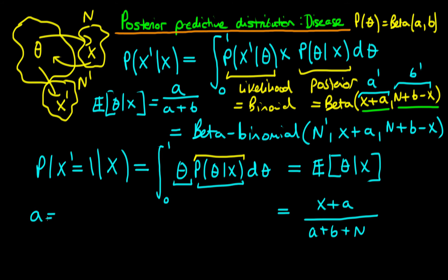In the case of a flat prior where a equals b equals 1, this becomes (x plus 1) over (n plus 2). It's easy to see how the data influences our posterior predictive probability. As x — the number of individuals in the sample who have the disease — increases while holding n constant, the probability increases. As n increases while holding x fixed, that represents a smaller proportion having the disease, and hence our predictive probability for a new person having the disease declines. This makes a lot of intuitive sense.